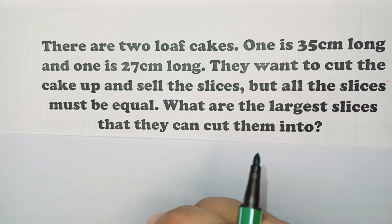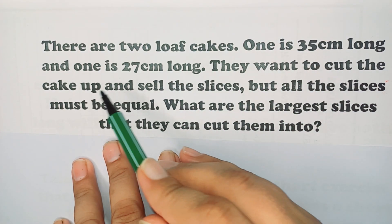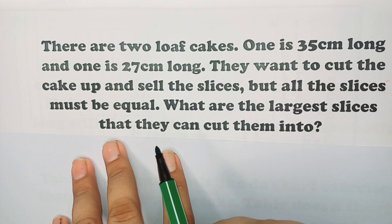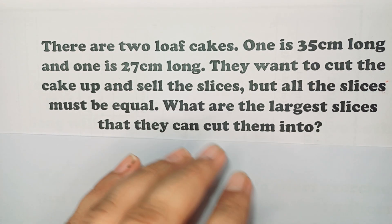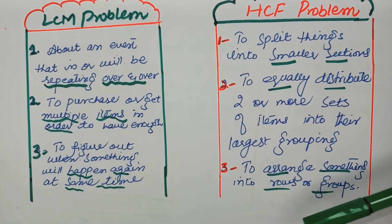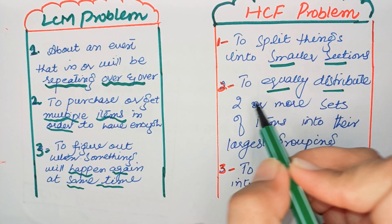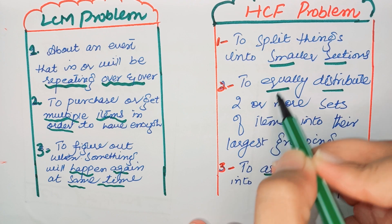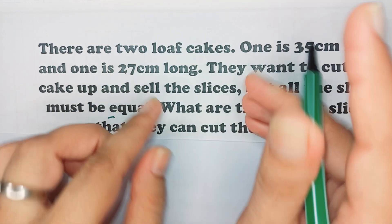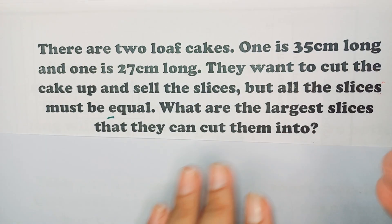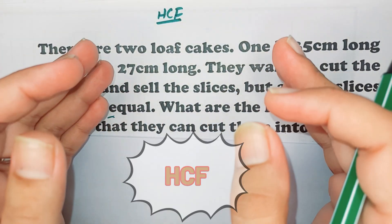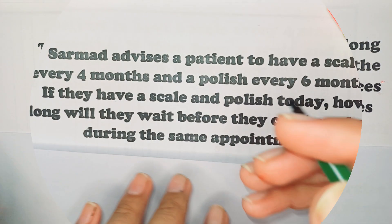Next problem: There are two loaf cakes — one is 35 cm long and one is 27 cm long. They want to cut the cakes and sell the slices, but all the slices must be equal. What is the largest slice that they can cut them into? Here you have to cut all the slices in equal sizes. Looking at our keywords: to equally distribute or to split things into smaller sections means you use HCF. Here you are splitting the cake into smaller slices and distributing equally, so this is an HCF problem.